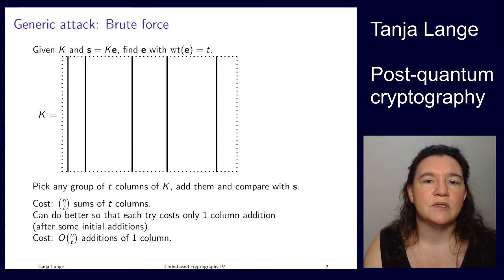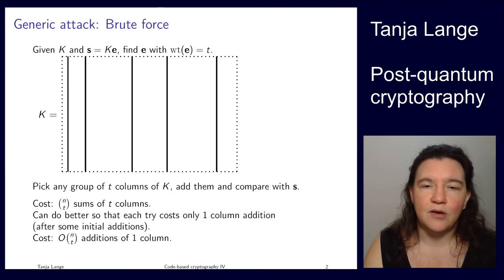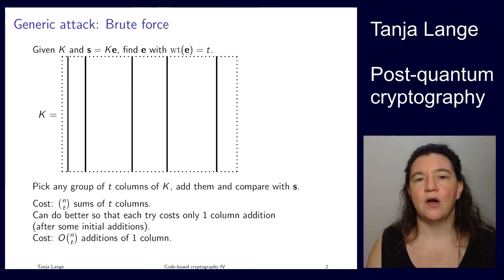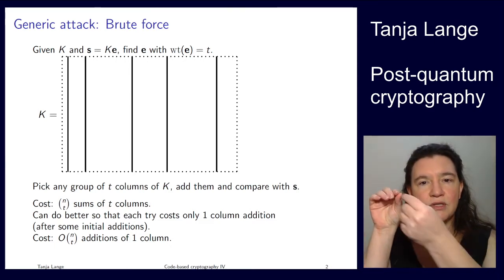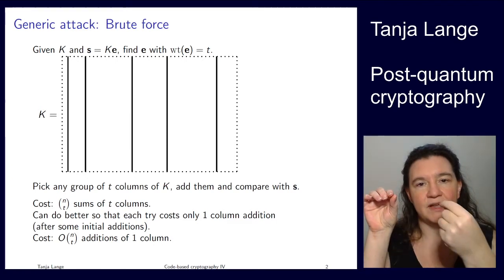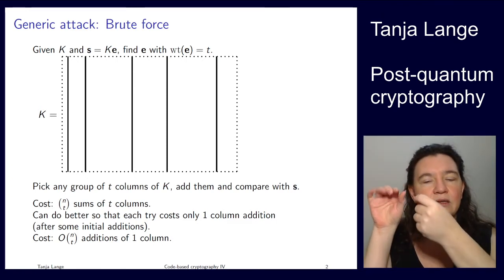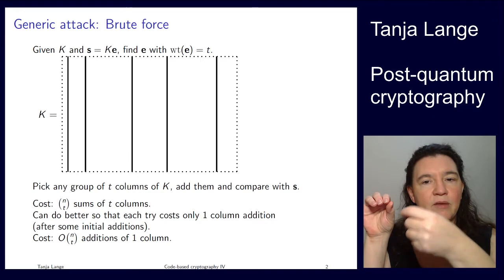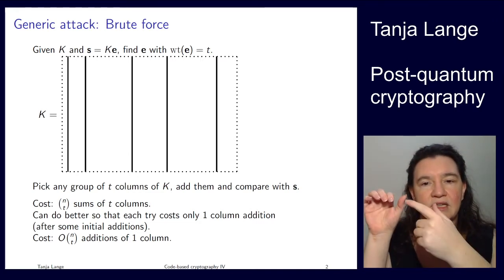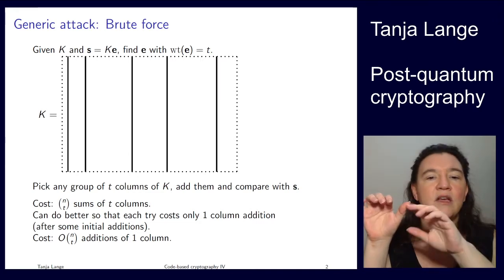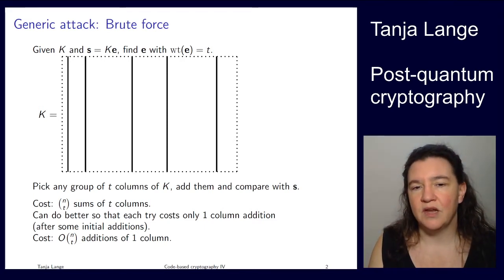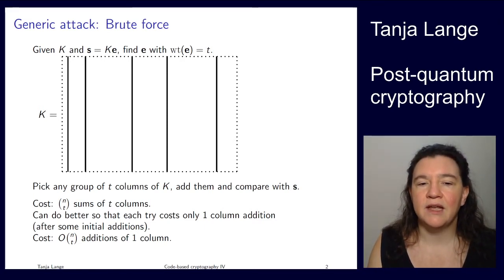We know it's t columns, so we have n columns to choose from. This will only have one good one, so to find this one you would typically need to choose n choose t sums of t columns. Of course you can get lucky earlier, you can get lucky later, but this is the average cost of this brute force attack. Doing each times t columns, you can optimize better. You can get the costs down to basically n choose t additions of just one column and some initial work. So that's the baseline of attacks.